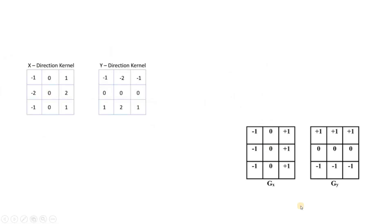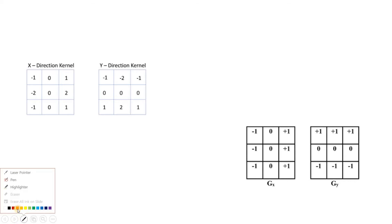You can design any kernel — just make sure the summation over all coefficients is zero. For example, the Sobel and Prewitt edge detection kernels: for Prewitt, the values are −1, −2, −1, 0, 0, 0, 1, 2, 1 — summation is zero. For the y-direction, summation is also zero. For Prewitt x-direction: −1, −1, −1, 0, 0, 0, 1, 1, 1 — overall zero. For y-direction: 1, 0, −1 pattern — also overall zero.